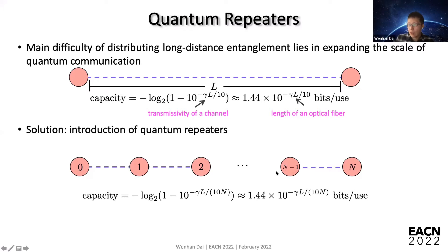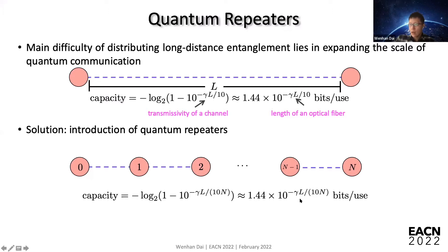If you insert a lot of repeaters, the capacity changes so that you now have both L, the distance between two nodes, and N, the number of channels or segments. You can imagine that if you insert a sufficient number of quantum repeaters — N large enough — this capacity does not rely on the distance anymore. If L divided by N is constant, the capacity is constant. So this exponential decay issue seems to be solved.